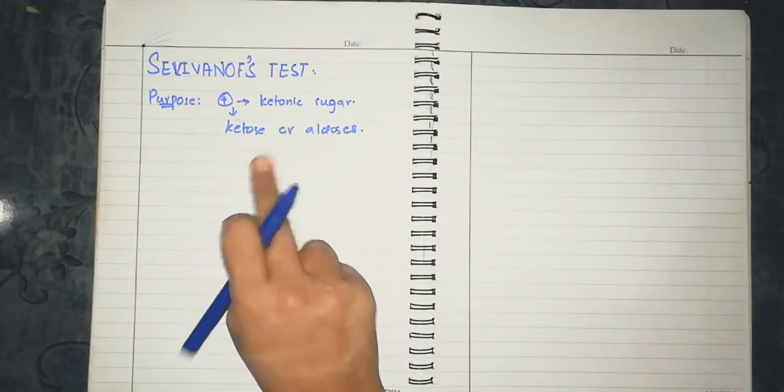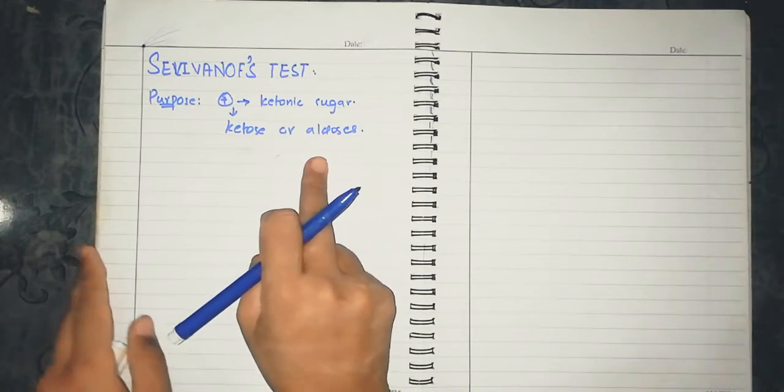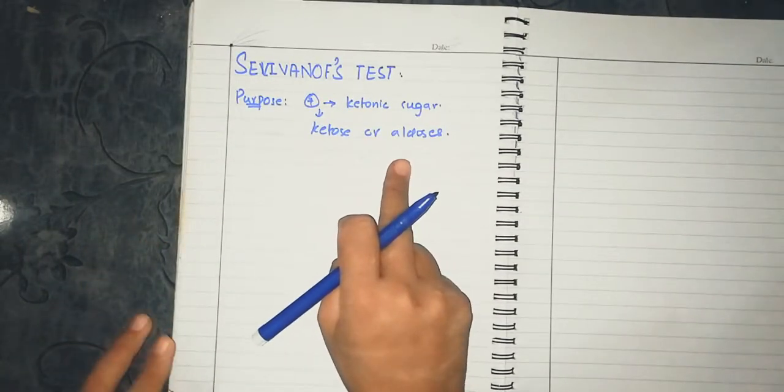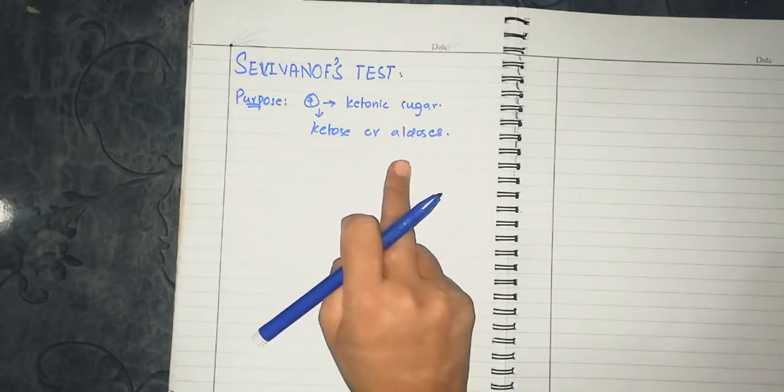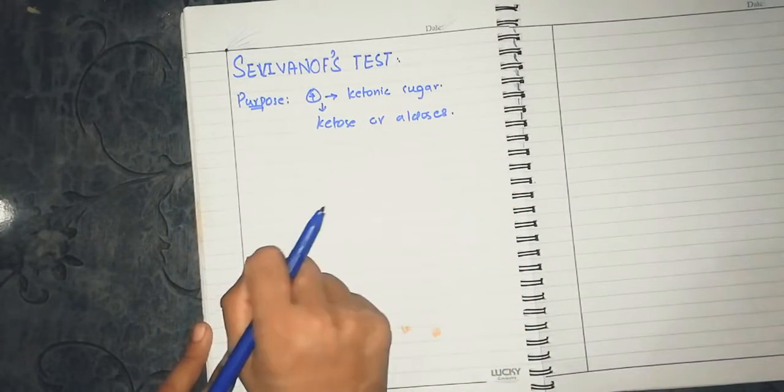This means we can separate ketoses and aldoses. We can separate ketonic sugars from carbohydrates and ketonic derivatives.